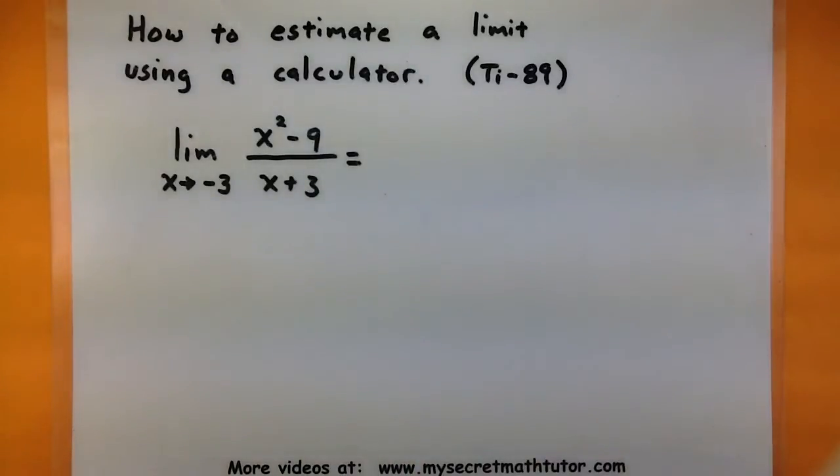So in order to estimate this limit, I'm going to be taking a look at values for x as they get closer and closer to negative 3 and then look at their corresponding y values to see if they get closer to any particular value. If they do, I'll go ahead and use that to estimate my limit and see what I get.